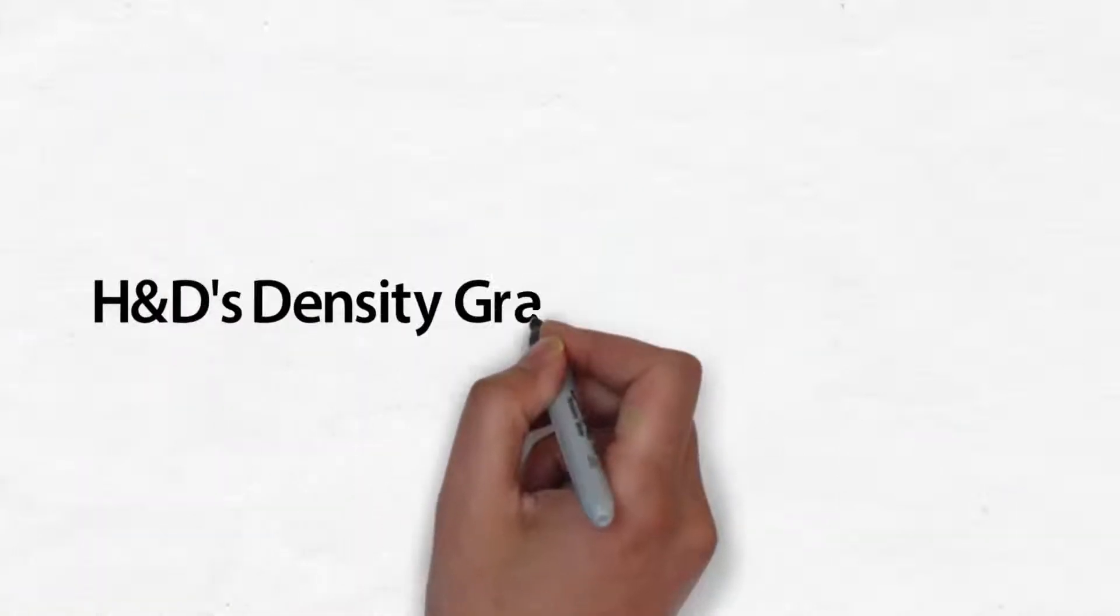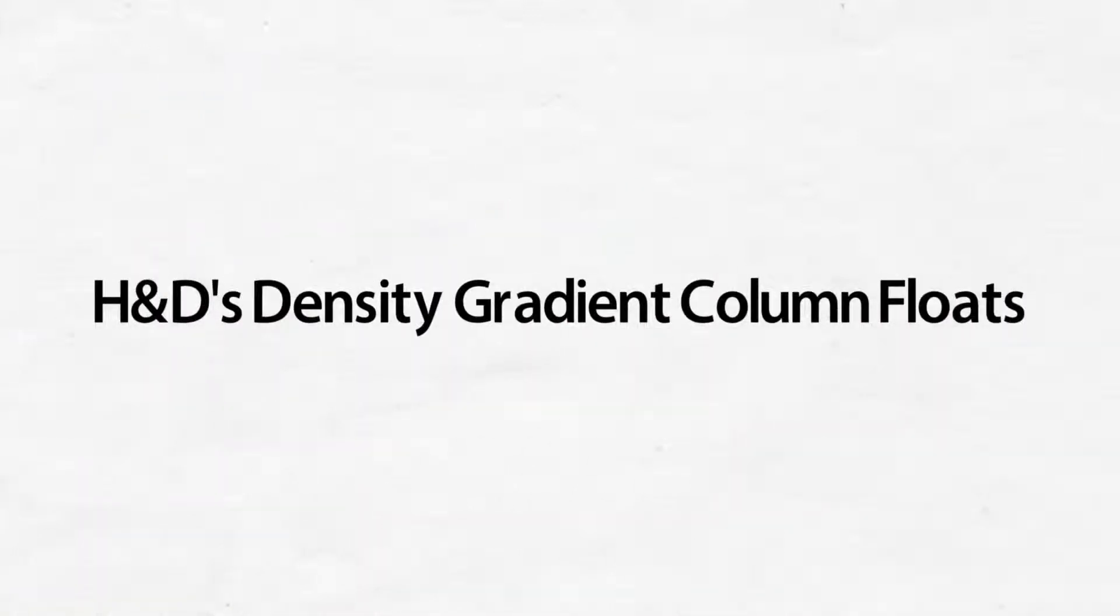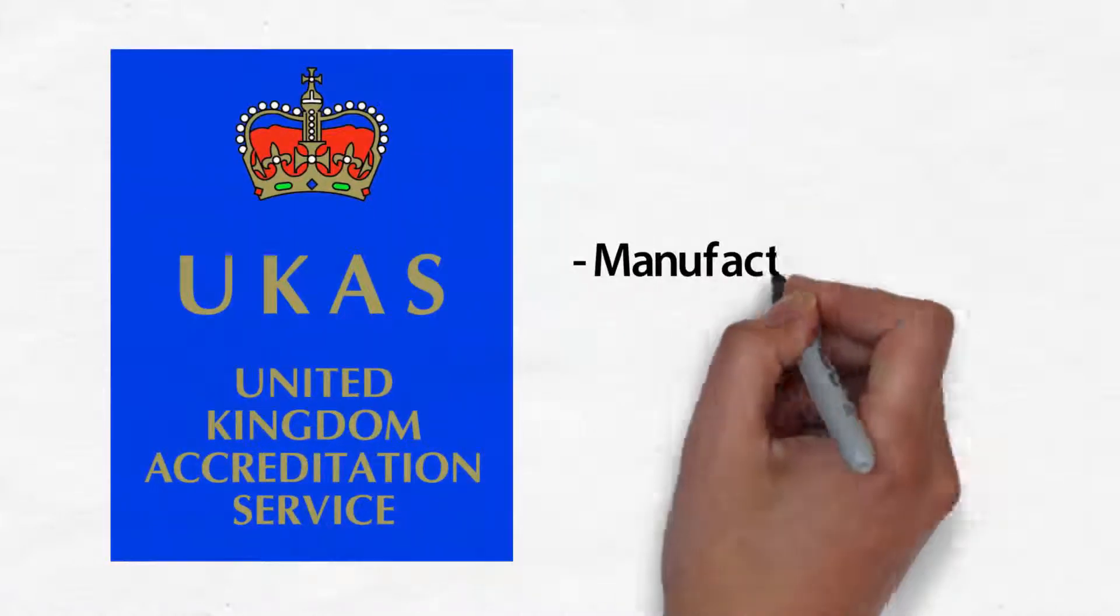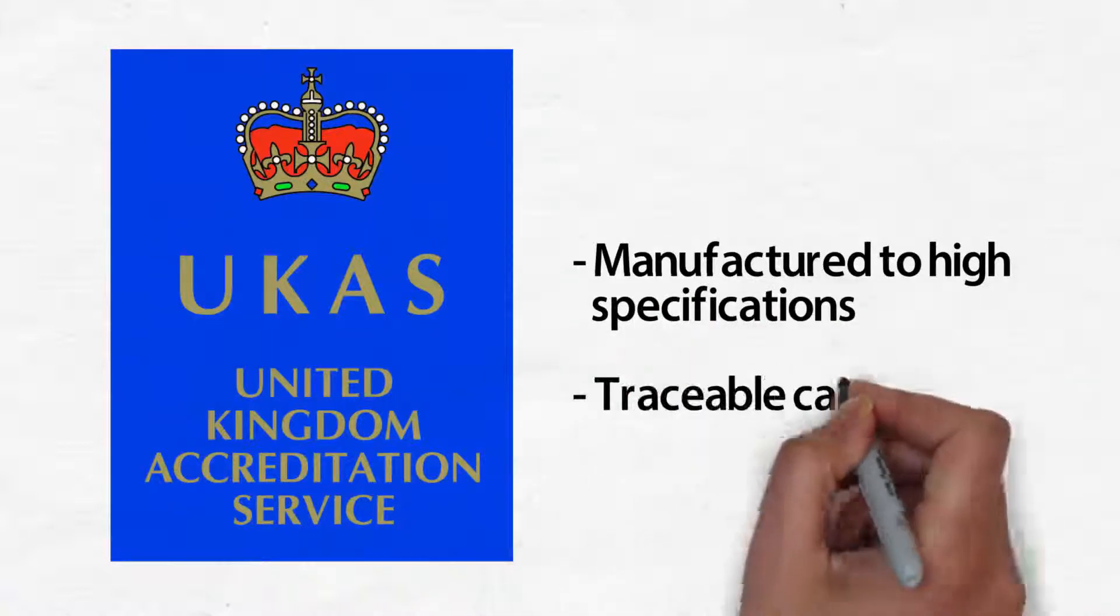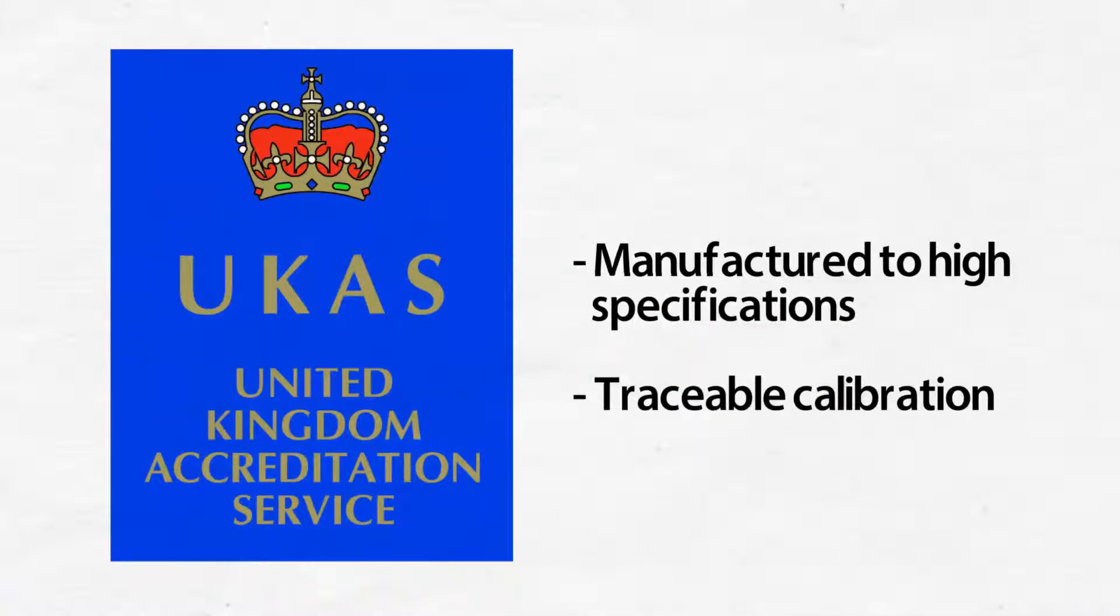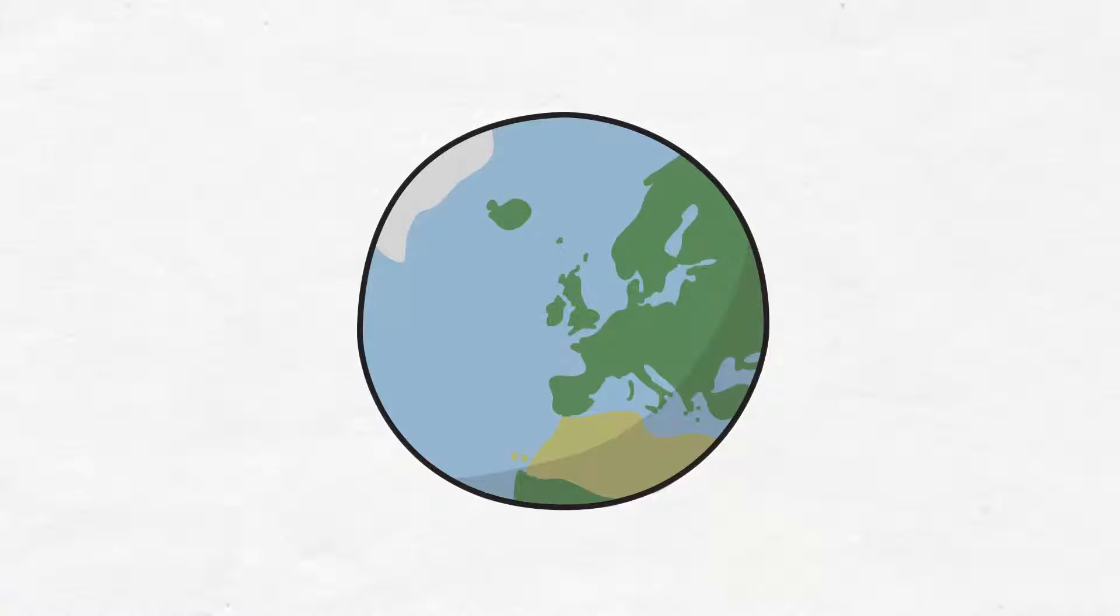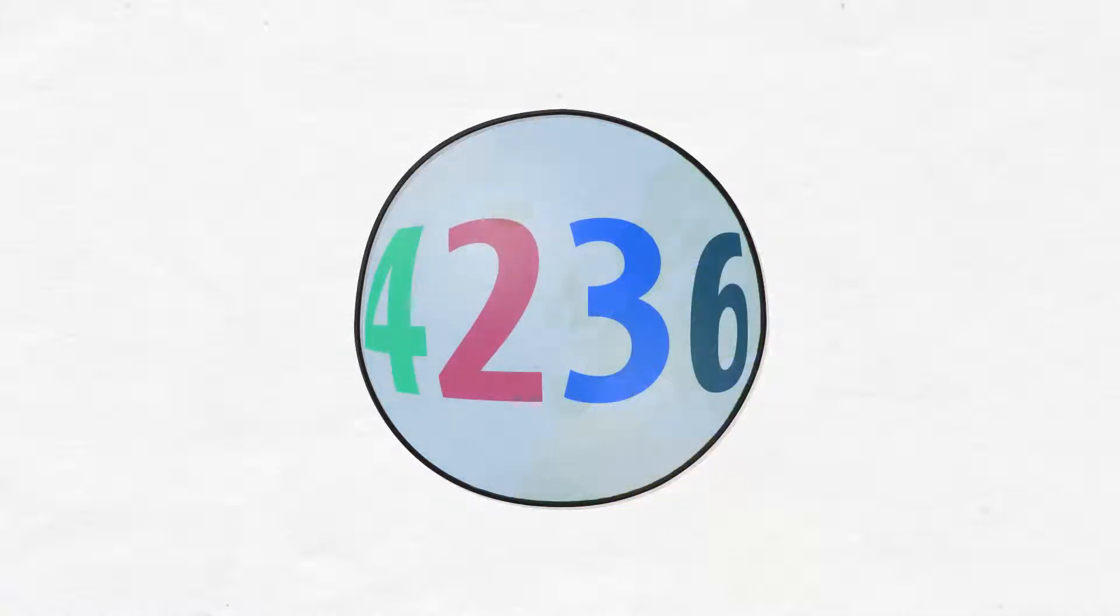H&D's Density Gradient Column Floats: H&D's glass floats are manufactured to the highest specifications and are calibrated traceably to recognized national standards. They are small, hollow glass spheres about 5mm in diameter. They are the only floats in the world which are marked with a unique identification number fused inside the glass.